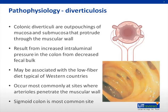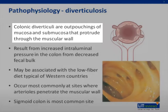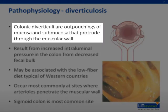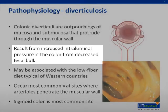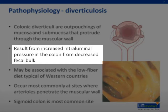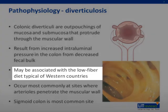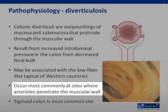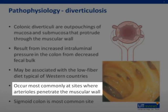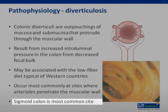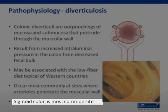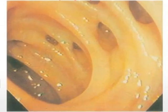Let's review the basic pathophysiology of diverticulosis. Colonic diverticuli are outpouchings of mucosa and submucosa that protrude through the muscular layer of the colonic wall. The formation of diverticuli is promoted by increased intraluminal pressure within the colon from decreased fecal bulk. This may be associated with the typical lower fiber diets of Western countries. Diverticuli occur most commonly at sites where arterioles penetrate the muscular wall of the colon. The sigmoid colon is the most commonly affected portion. The picture on the lower right demonstrates the presence of diverticulosis as viewed from a colonoscope.